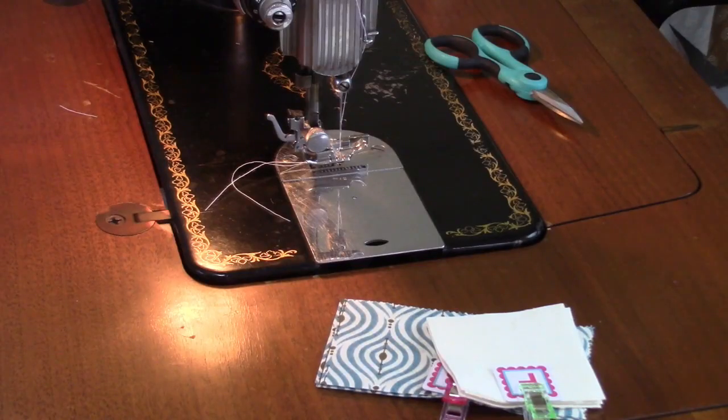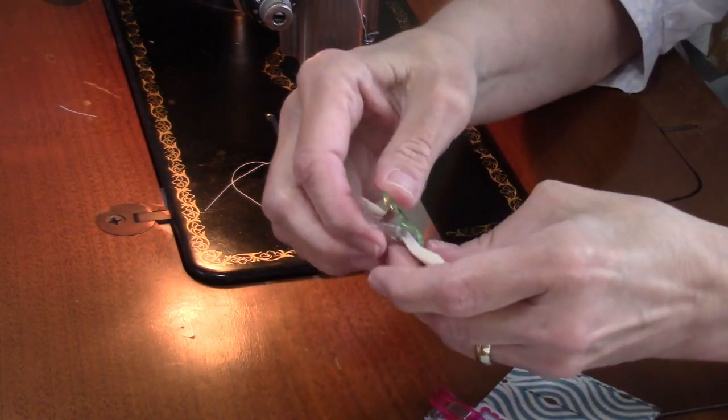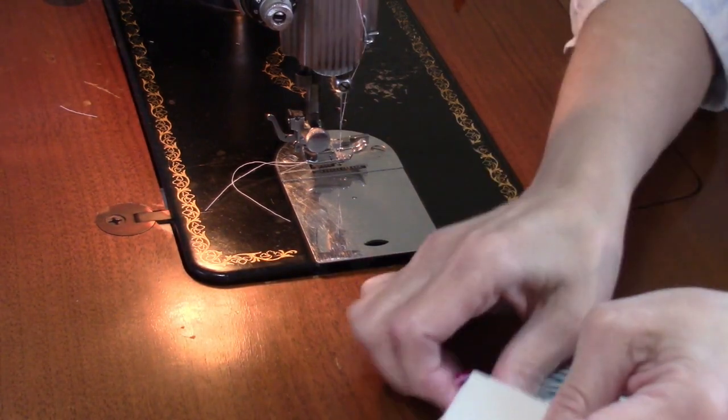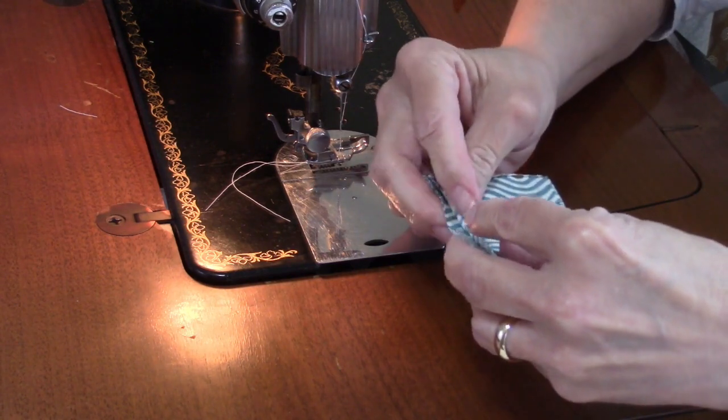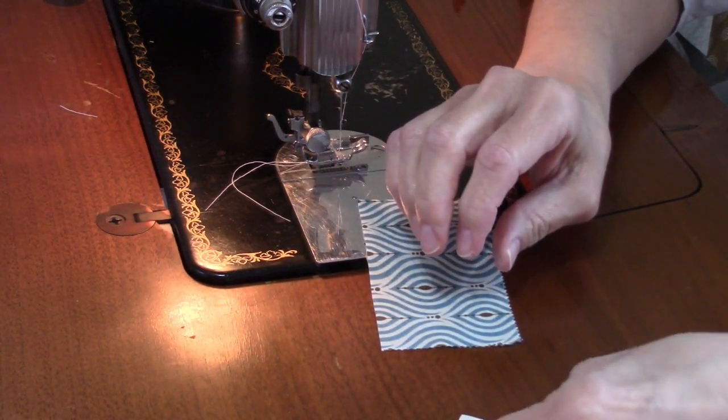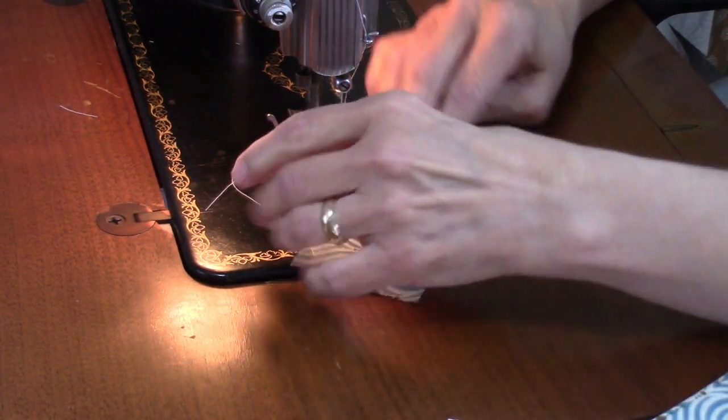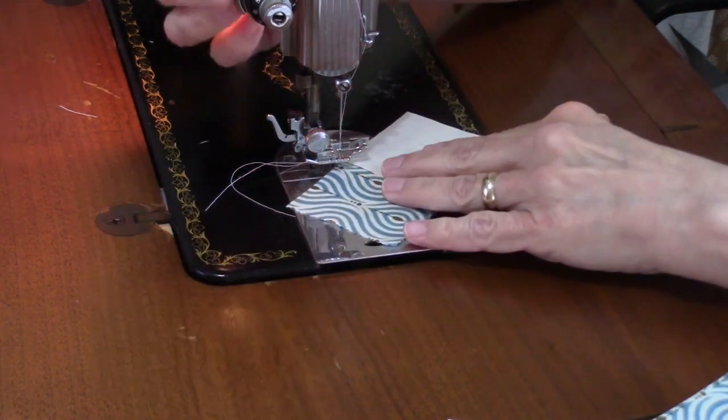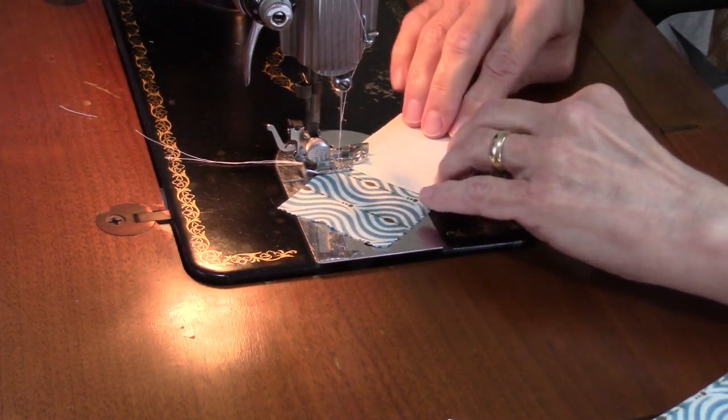First thing we're going to do is make flying geese units and that will require the B rectangles and the F squares. Now on these F squares you can draw a diagonal line on the wrong side if you want. What I'm going to do is just eyeball it going corner to corner. I'm going to take a square and place this on the right side and I'm going to sew from the top center to the bottom right-hand corner of that square.